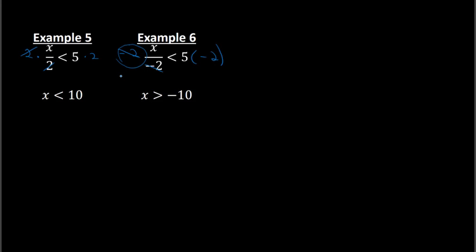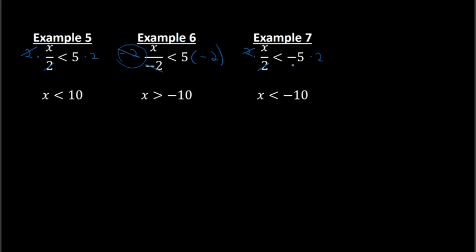So once again, the rule is: if I'm multiplying or dividing by a negative number, I need to switch the inequality. Example 7: to get rid of the 2 in the bottom I need to multiply both sides by 2. That will cancel, x is on the left, and negative 5 times 2 is negative 10 on the right. But even though there's a negative with the 5, I'm multiplying by a positive 2. So because I'm multiplying by a positive, there is no need to switch the inequality. This would remain as x is less than negative 10.